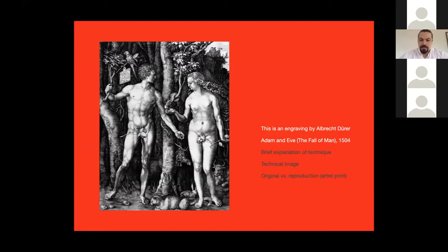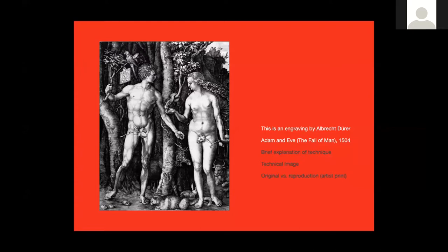This is an engraving by Albrecht Dürer called Adam and Eve, The Fall of Man, 1504. This is not a drawing, but a drawing transcribed through a copper plate engraved using a tool called the burin — lines cut into the metal. Ink is pushed into those lines and then pressed onto paper with a printing press. This is the process of reproduction of the image — a technical image.